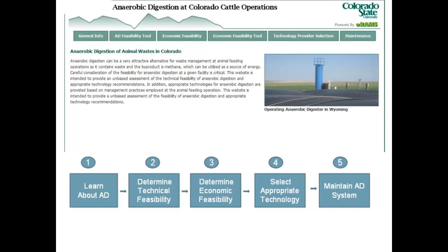The tool outlines installing an anaerobic digester in a series of steps, developed through my extension appointment to get reliable information out to producers. The first step is to learn about anaerobic digestion. The second is to determine technical feasibility — there are simple things producers can do early on to indicate whether they'd have issues. We can always make technologies work by adding water into the waste, but that means the producer must also deal with a resulting wastewater stream. So they need to look at technical feasibility first, then economic feasibility, then select an appropriate technology, and maintain the system.